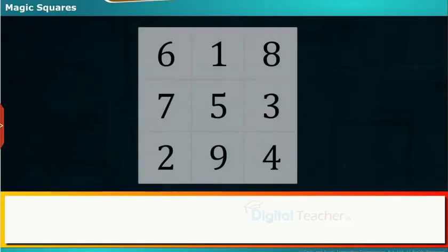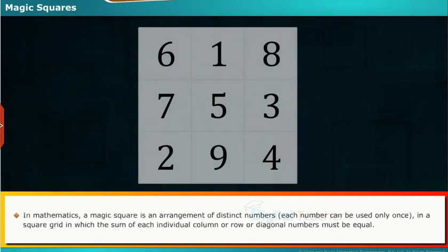Let us discuss magic squares. In mathematics, a magic square is an arrangement of distinct numbers. Each number can be used only once in a square grid in which the sum of each individual column or row or diagonal numbers must be equal.